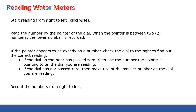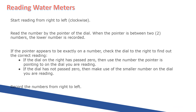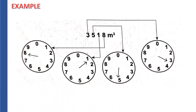Now let us discuss reading water meters. The procedures are almost the same as reading electric meters, with one key difference: this time, we record the numbers from right to left. Unlike the electric meter where you write the reading starting from the left, for water meters the first number you record is the one on the right, moving toward the left.